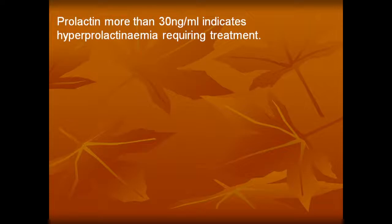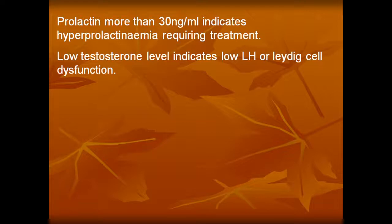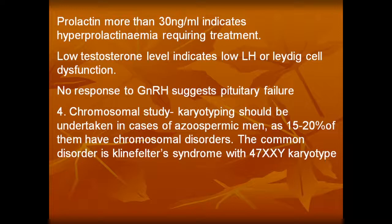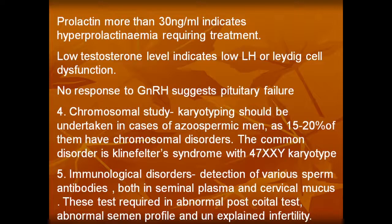Low testosterone level indicates low LH or Leydig cell dysfunction; no response to GnRH indicates primary testicular failure. Fourth is chromosomal studies — karyotyping should be undertaken in cases of azoospermic men, as 15 to 20 percent of them have chromosomal defects. The common disorder is Klinefelter syndrome with 47 XXY karyotype. Fifth is immunological disorder — detection of various sperm antibodies both in seminal plasma and cervical mucus, required in abnormal post-coital test and unexplained infertility.